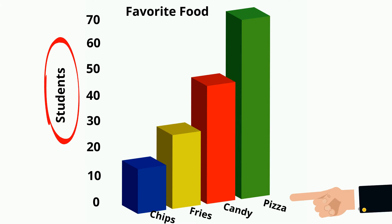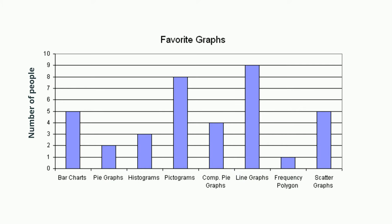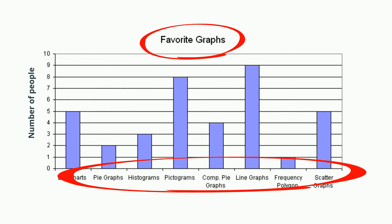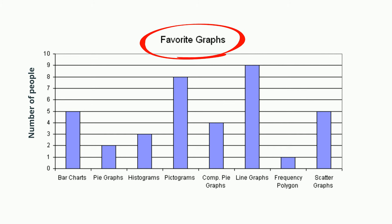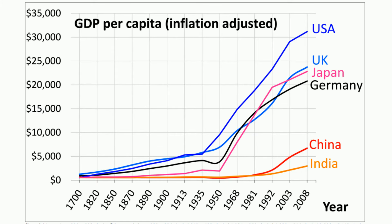Another example — and this is fun — a favorite graph. Again, you have categories: bar charts, pie graphs, histograms, etc. And then the number of people is your y-axis. Again, it uses categories. Now let's contrast this to a line graph.